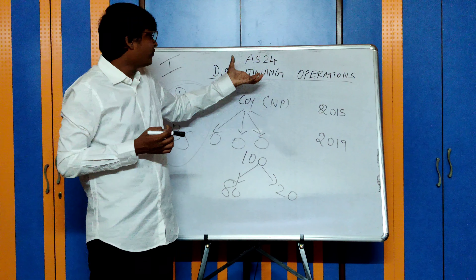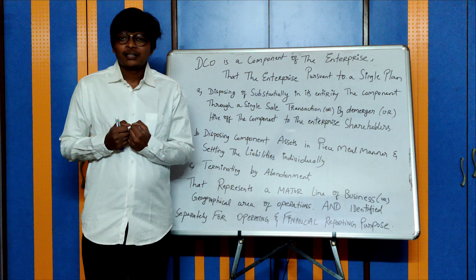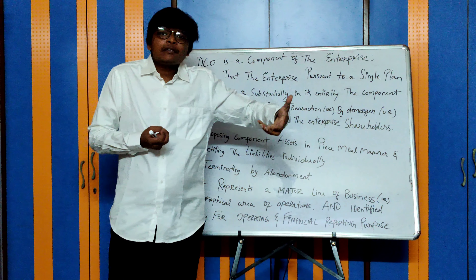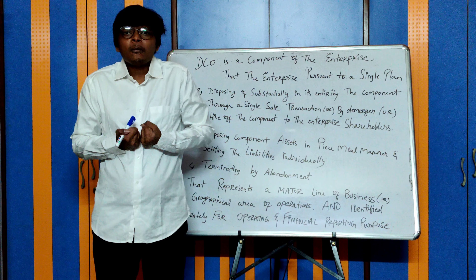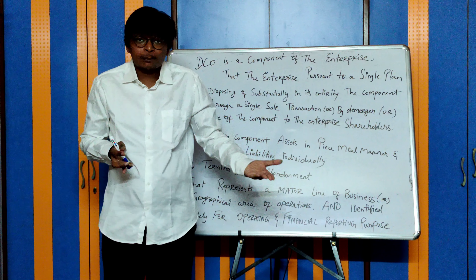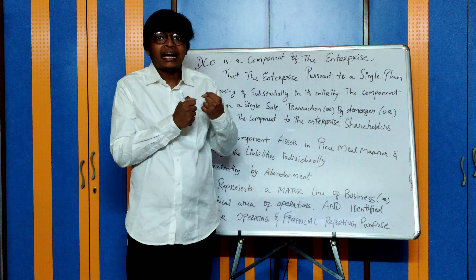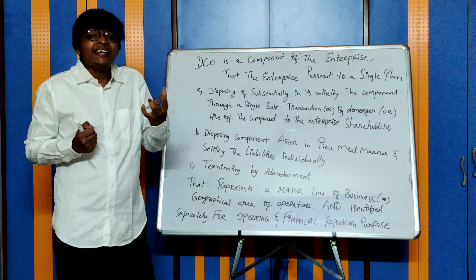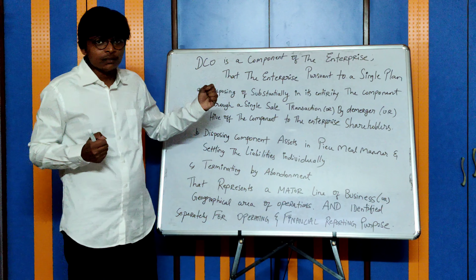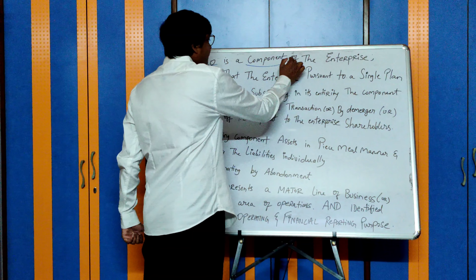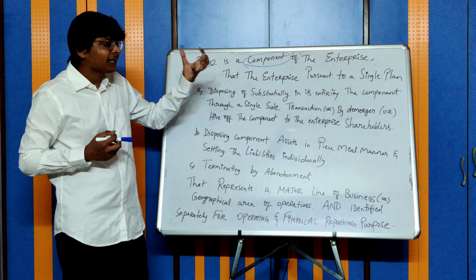Let us look at the definition of what is a discontinuing operation. We need to disclose all assets, liabilities, and profits from continuing operations and discontinuing operations separately in financial statements until the operations are finally sold off. AS24 defines what is a discontinuing operation — it has a big definition, but fairly simple. First, it says a discontinuing operation is a component of the enterprise.